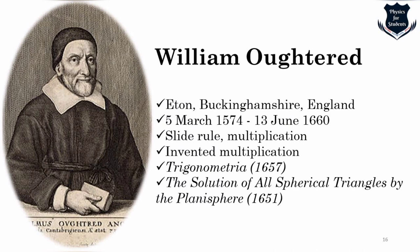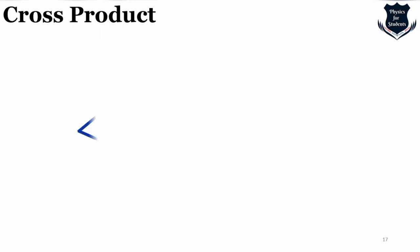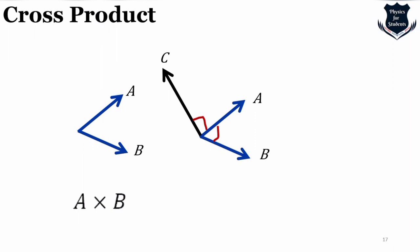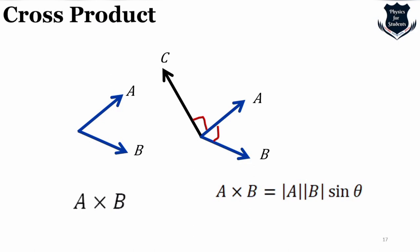Let us look at other uses of the cross multiplication sign. The cross product is a binary operation on two vectors in three-dimensional space, resulting in a vector perpendicular to both. Vectors a and b, when cross-multiplied, produce another vector c perpendicular to each, and the magnitude is |a||b|sin θ.